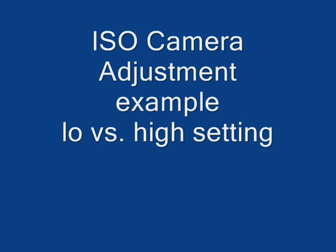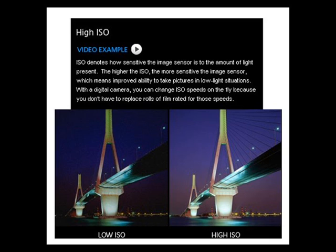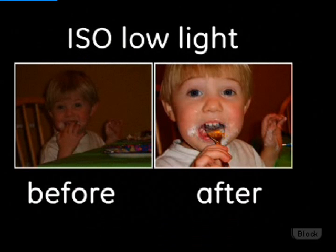This short clip changes the ISO reading from auto to 800 and shows you the difference in brightness of the picture when you go to a higher ISO setting on your camera.